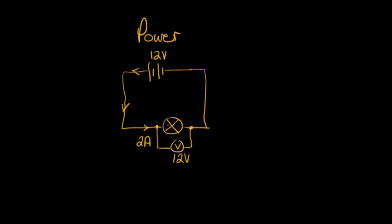And we could calculate the power developed by this lamp, that remember is the energy transferred per second from electrical energy into heat and light in the lamp. We can calculate that power by using the equation power equals V, the potential difference across the component, times by I, the current through the component. So in this case the power would be 12 times by 2 and we would get 24 watts.